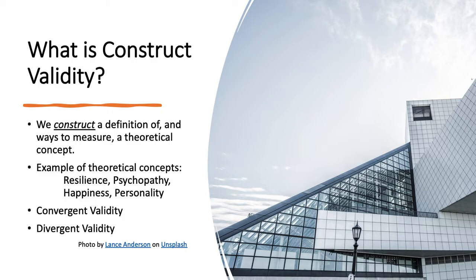We also have divergent validity. You would expect that this test is going to differ with a disparate construct. So with resilience, we may give our new test alongside a hopelessness measure. We give a large, diverse sample both our resilience test and a test on hopelessness, and we would hope there would be a negative correlation between those two tests. I haven't gone into the literature to verify that, but I suspect there is a negative correlation, and that would be divergent validity.